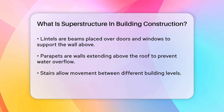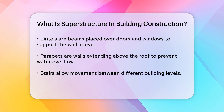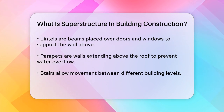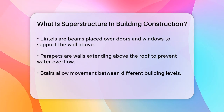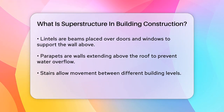Other important elements include lintels, which are beams over doors and windows that support the wall above these openings, and parapets, which are the external walls that extend past the roof slab to prevent water from pouring over the edges.